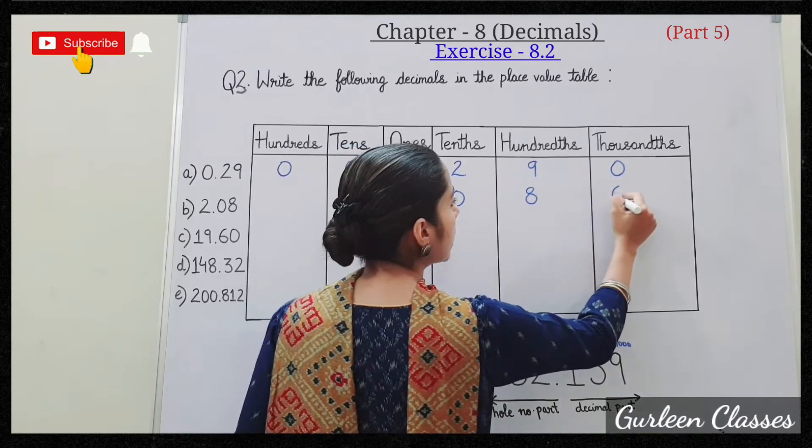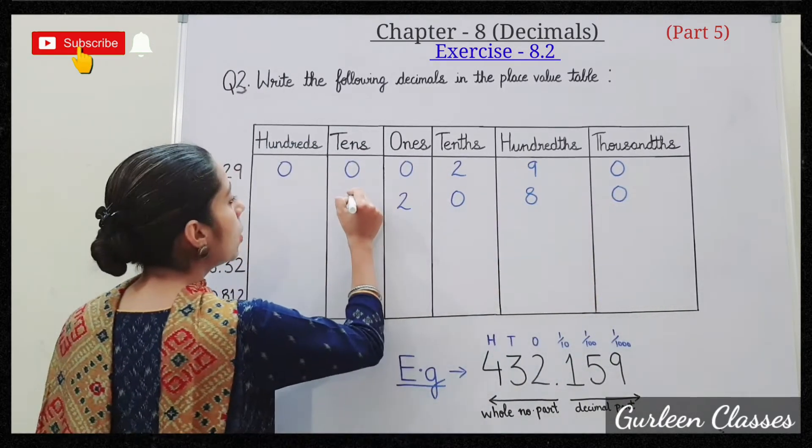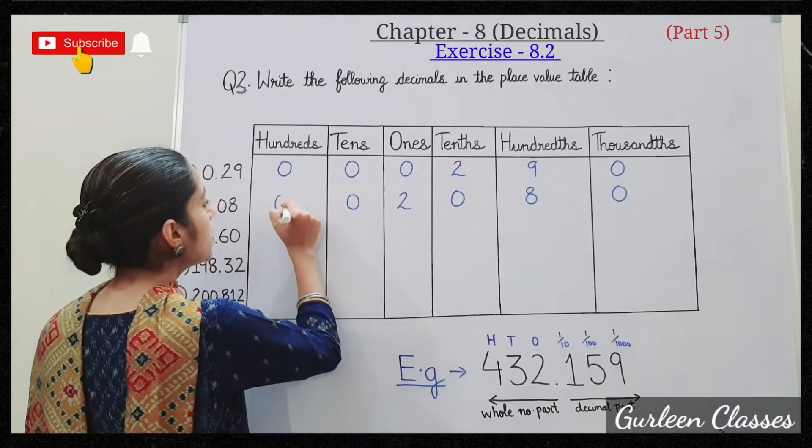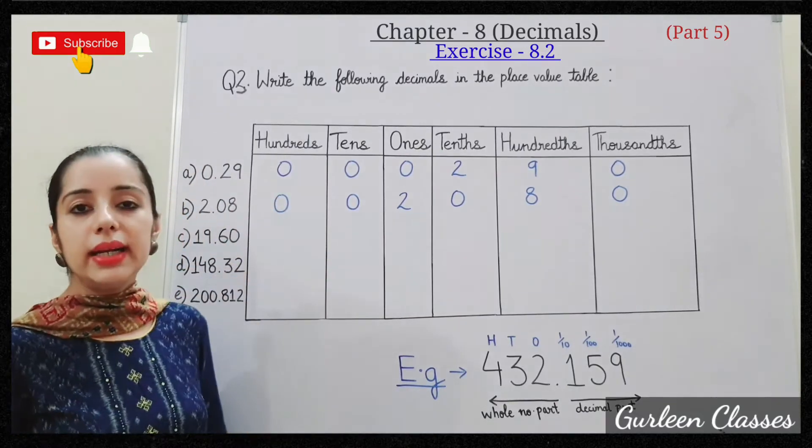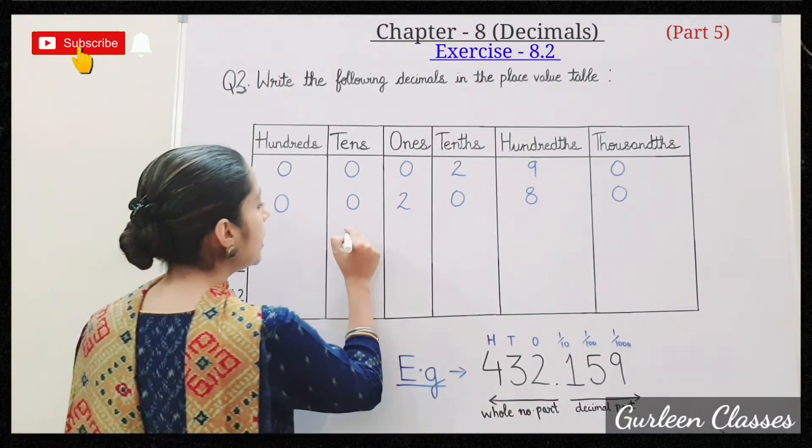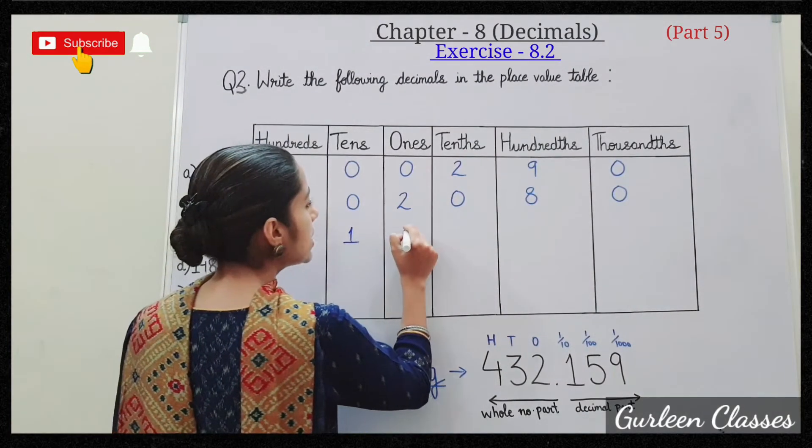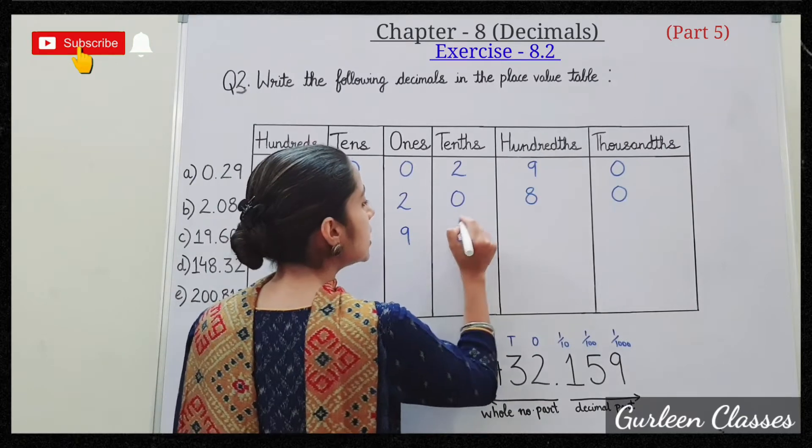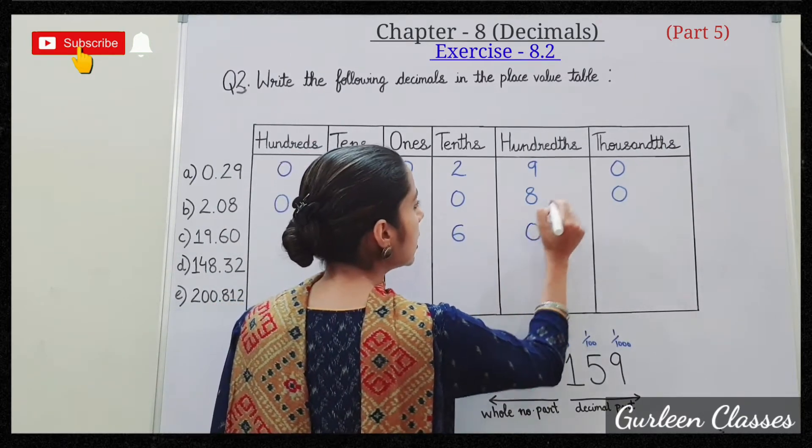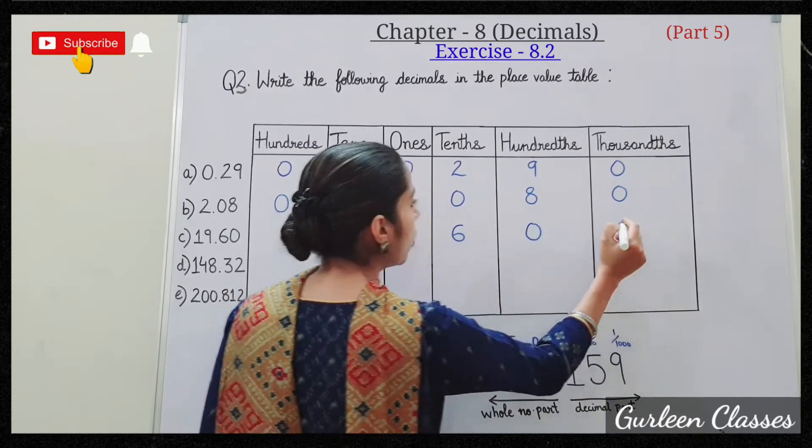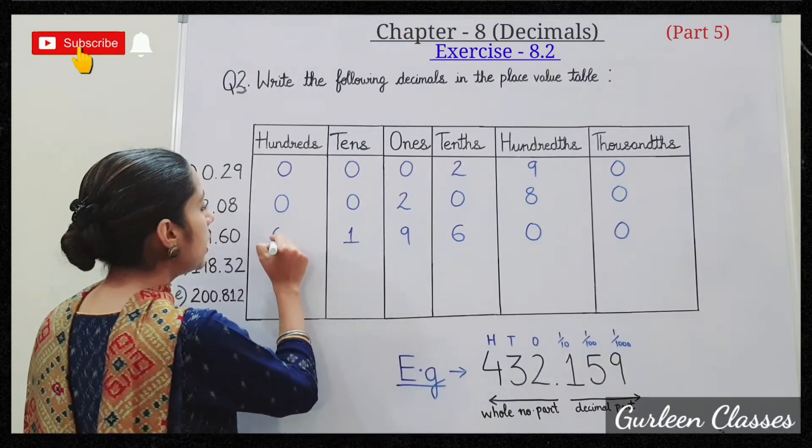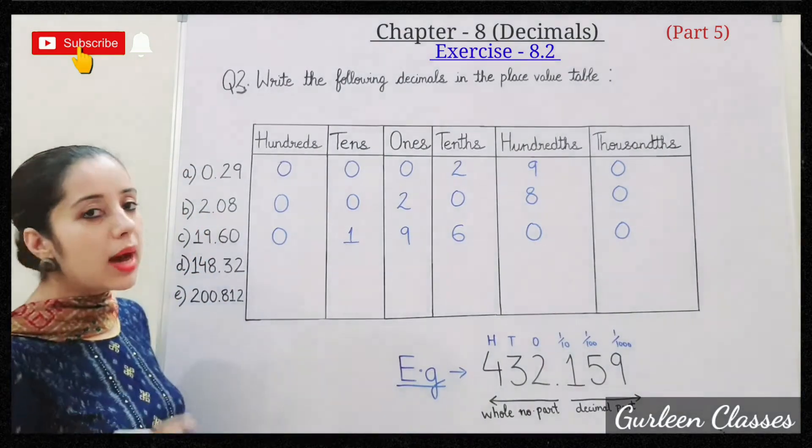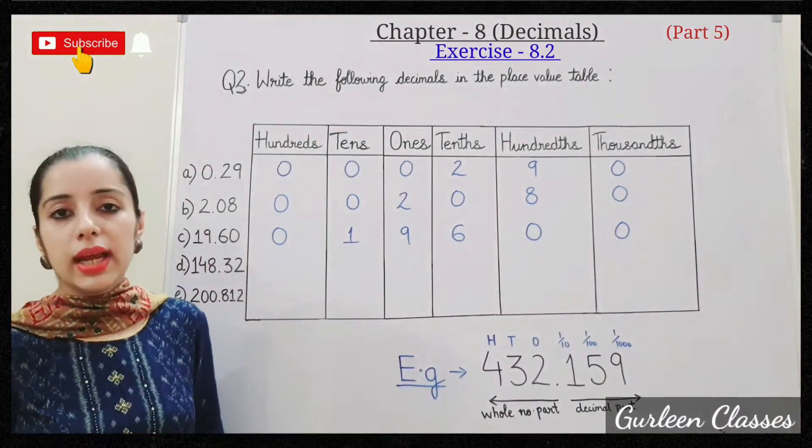So we will put 0 at thousandths place and 0 at tens and hundreds place. C: 19.60. So 1 is at tens place, 9 is at ones place, 6 is at tenths place, 0 at hundredths place, thousandths place will be 0 and hundreds place will be 0.